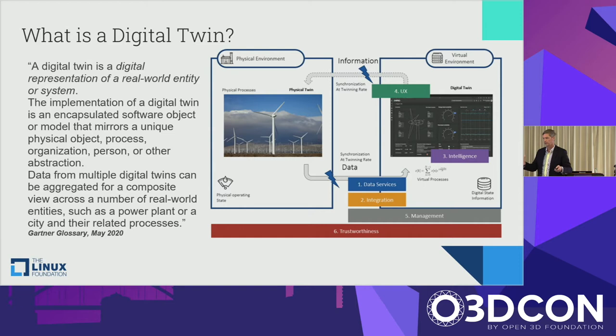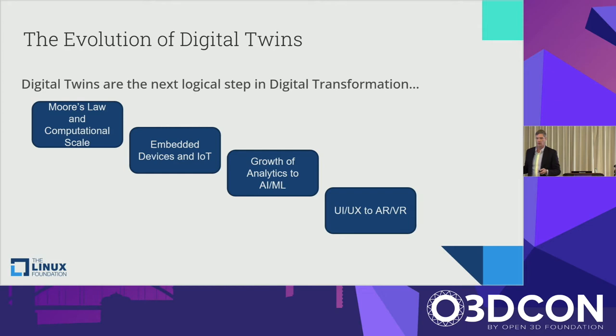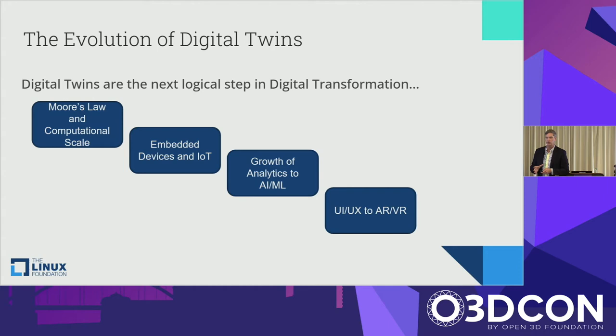Let's talk about the evolution of where we got here. First, Moore's Law and computational scale — the fact that we get more and more processing out of physically less and less hardware, like chipsets and CPUs. Now we're in the age of SoCs — systems on a chip — which integrate both a CPU and a GPU simultaneously in a small space, giving you the ability to put things at a much more dynamic scale for integration and platforms.